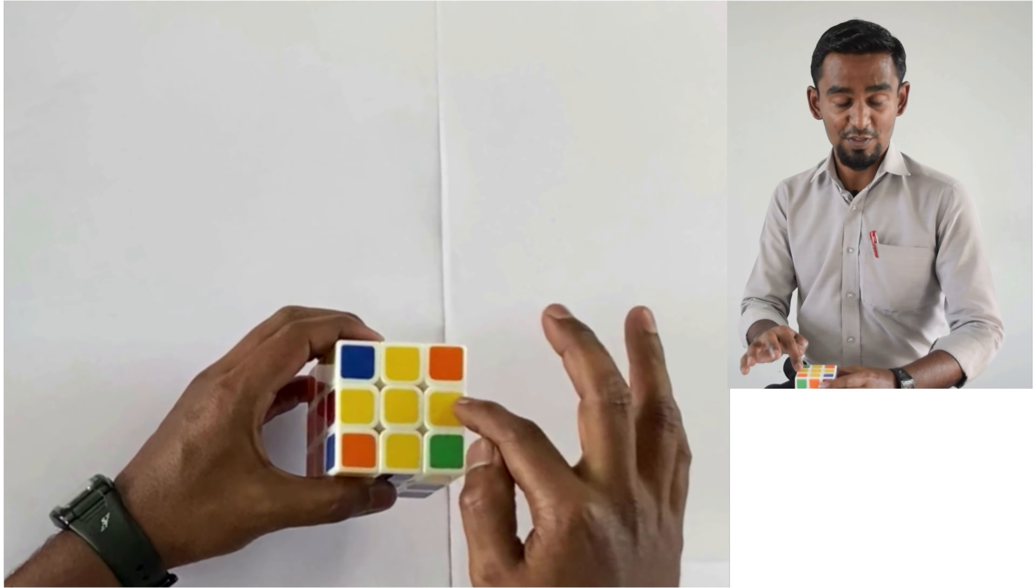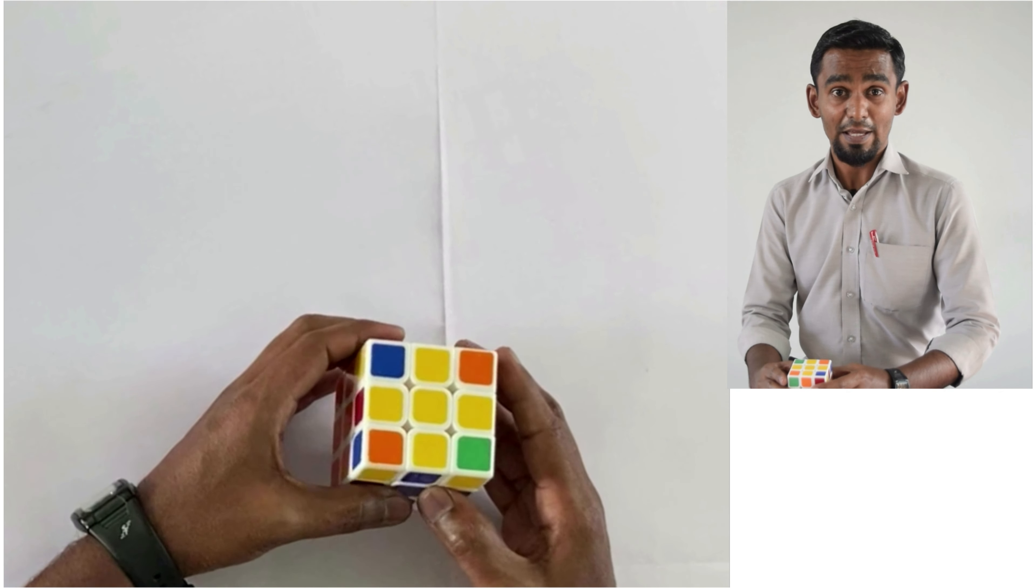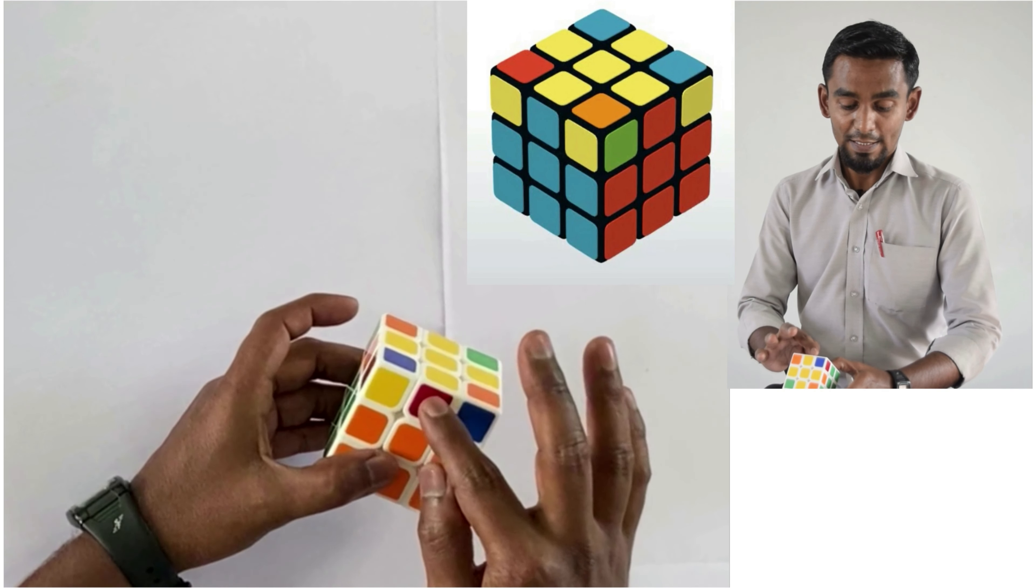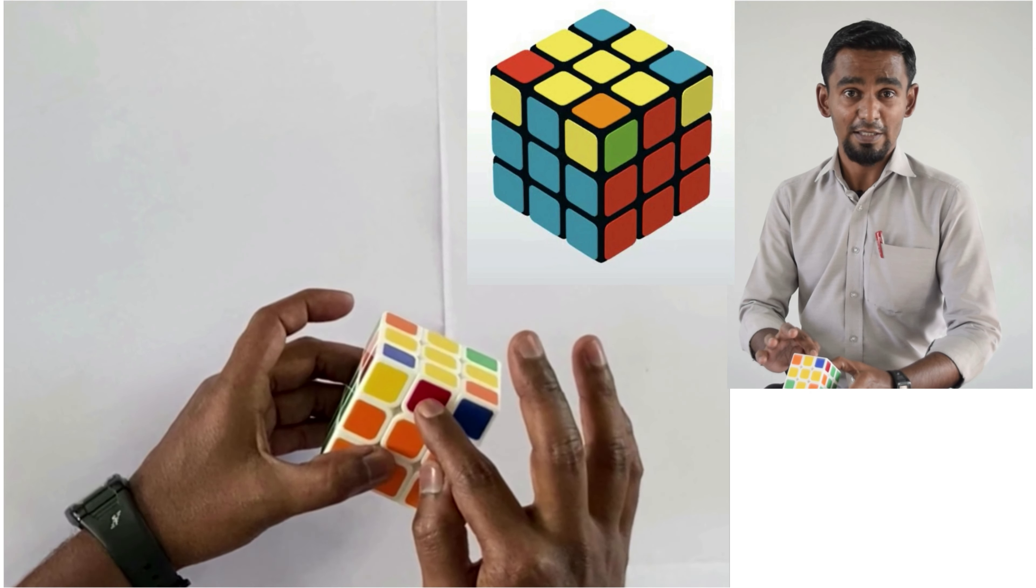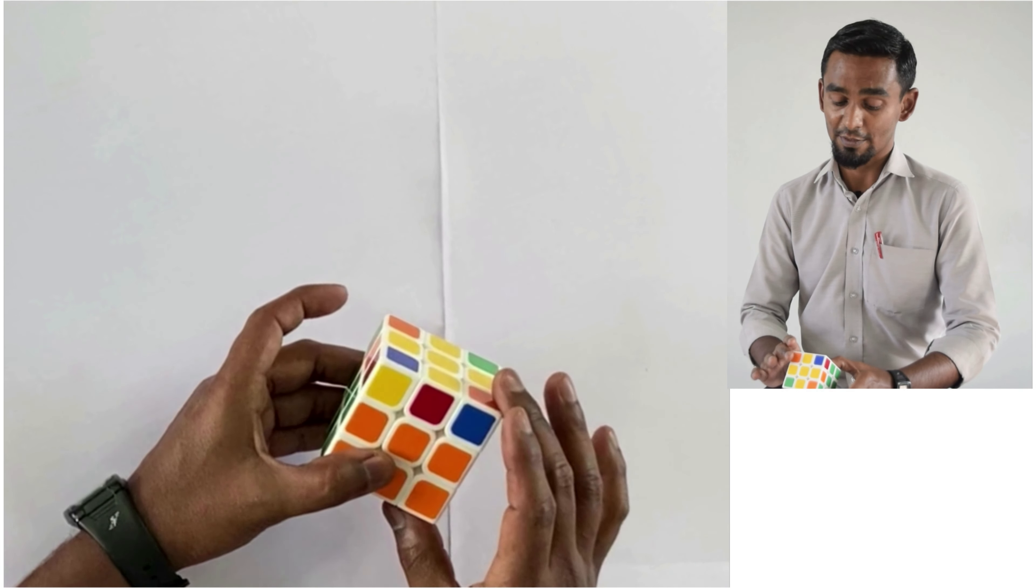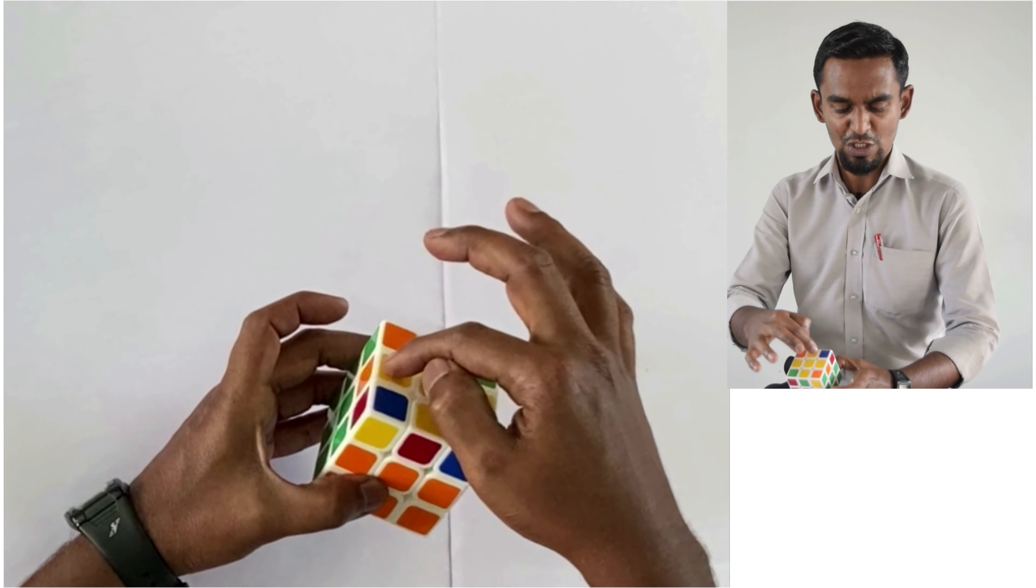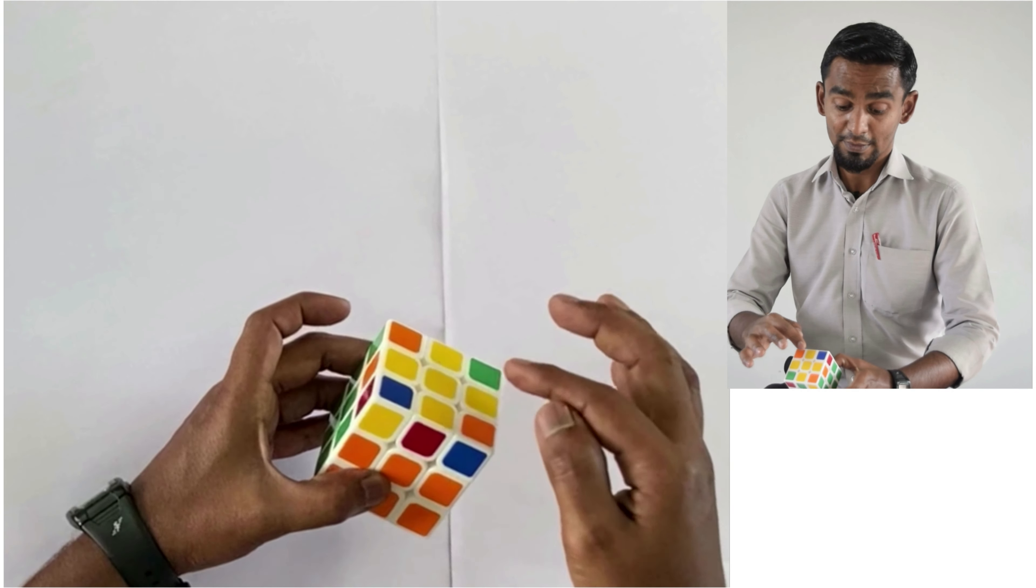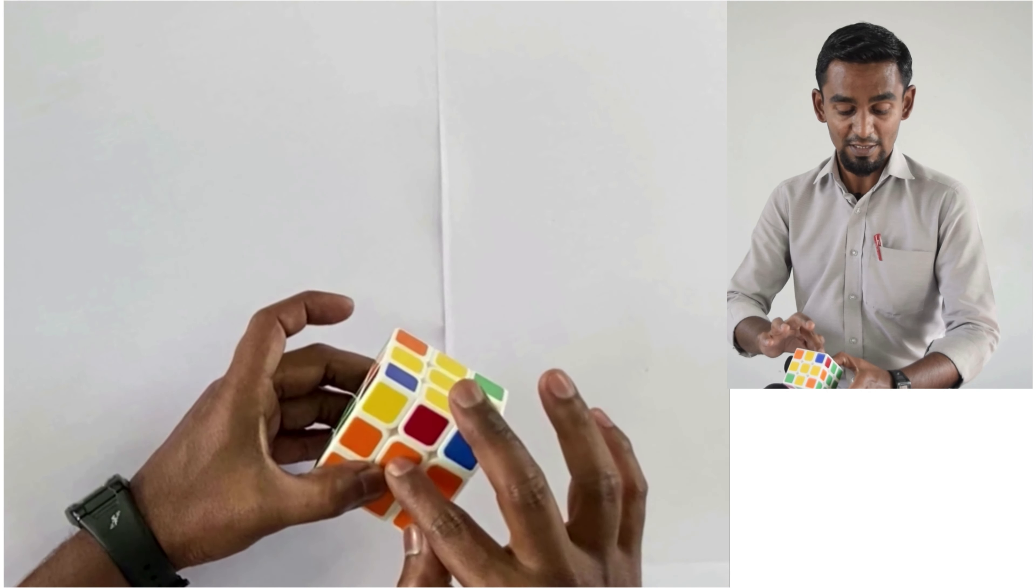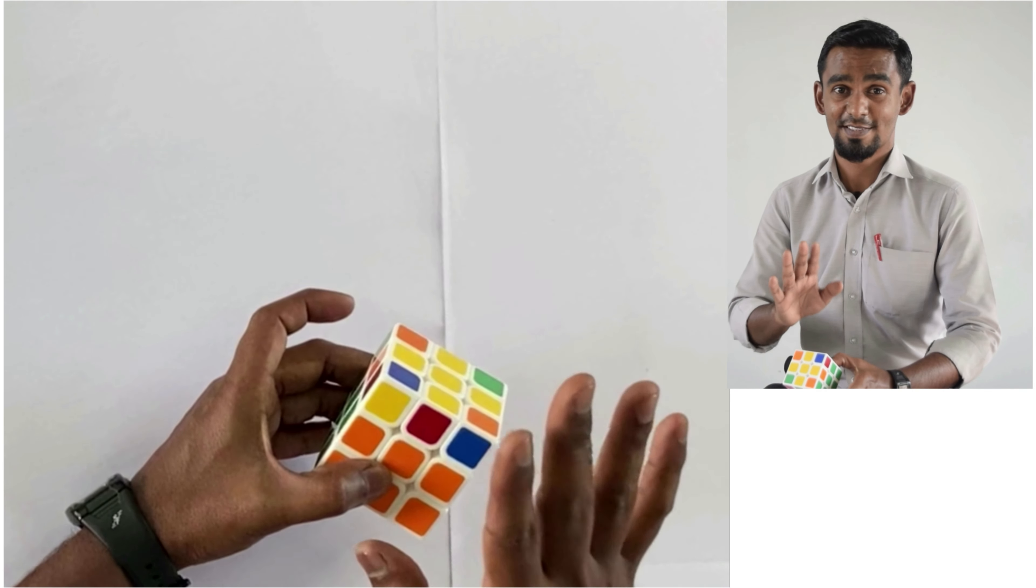Now we already have a yellow cross on the up face. Step 5 is going to be the formation of edge tiles matching the color of the central tile of each face. That is the job of step 5.